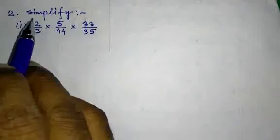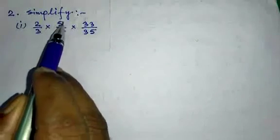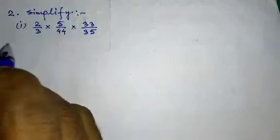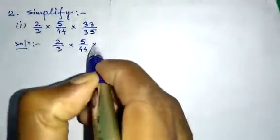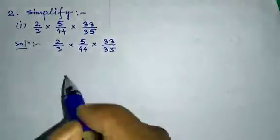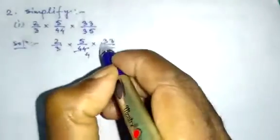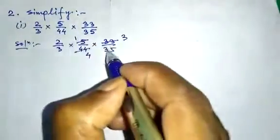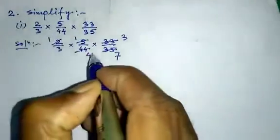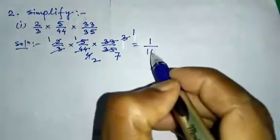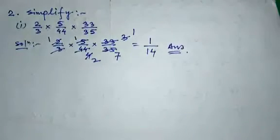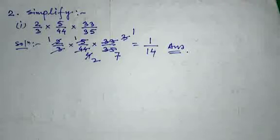Now question number 2 — simplify. Number 1: 2/3 into 5/44 into 33/35. The rest of the sums from question number 2 to question number 6 — do yourself.